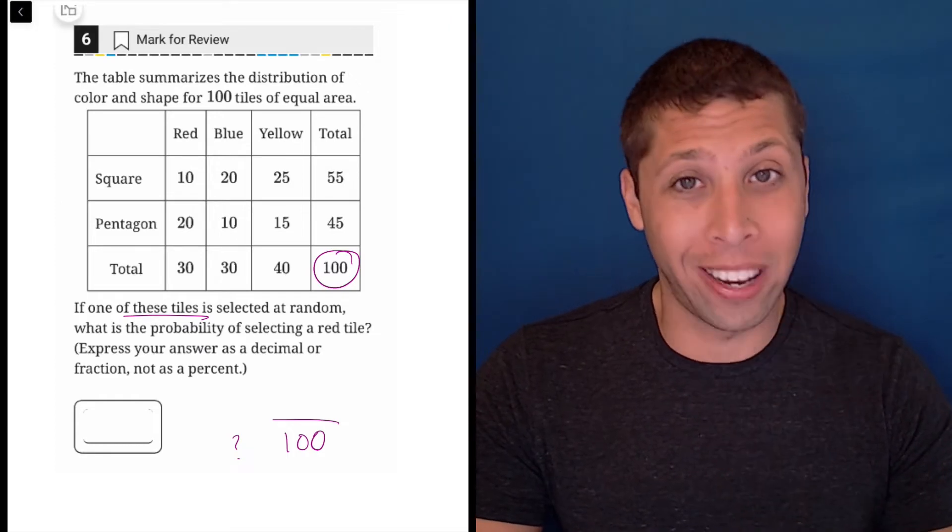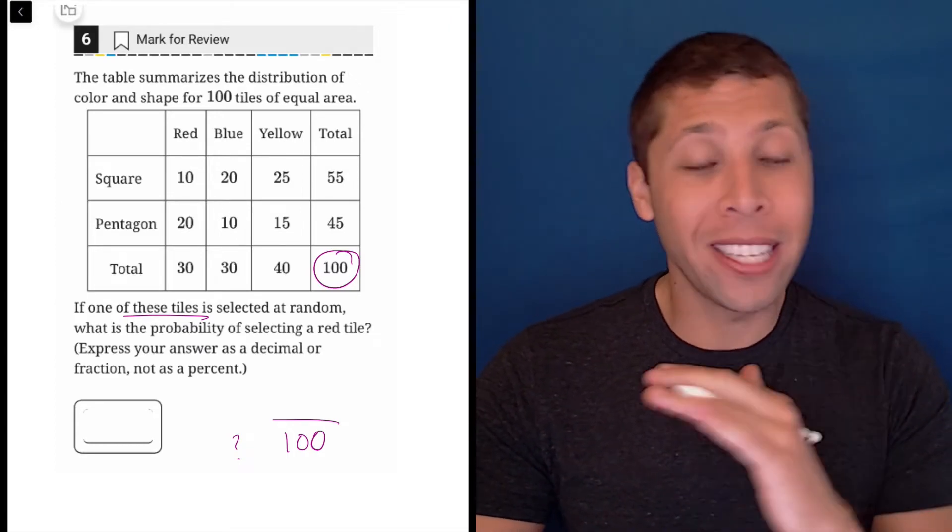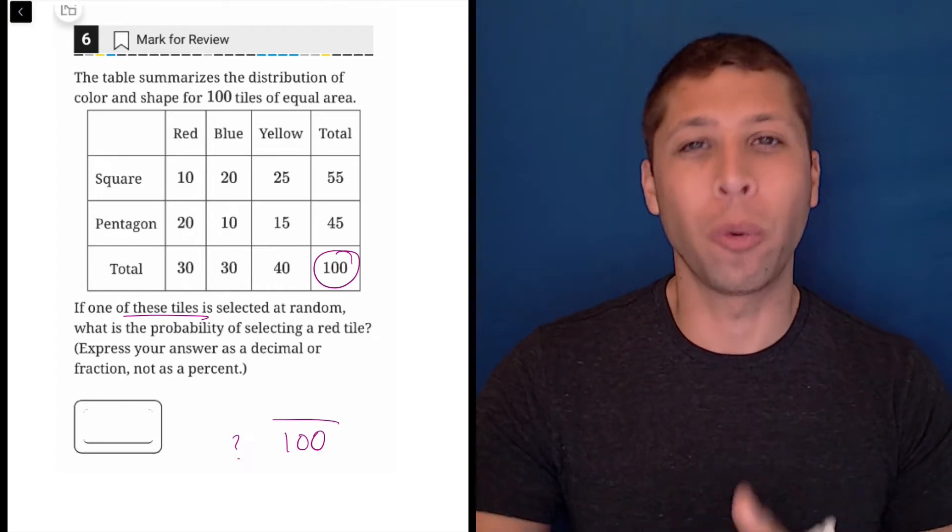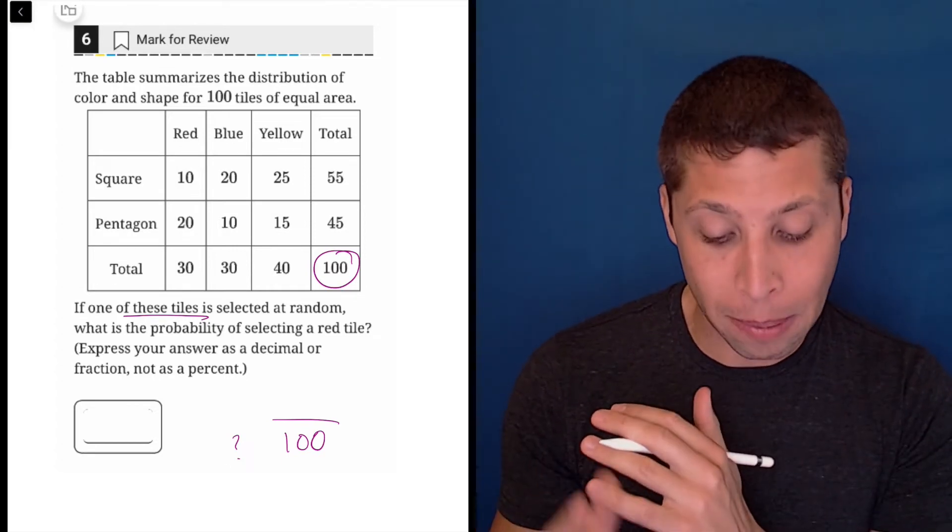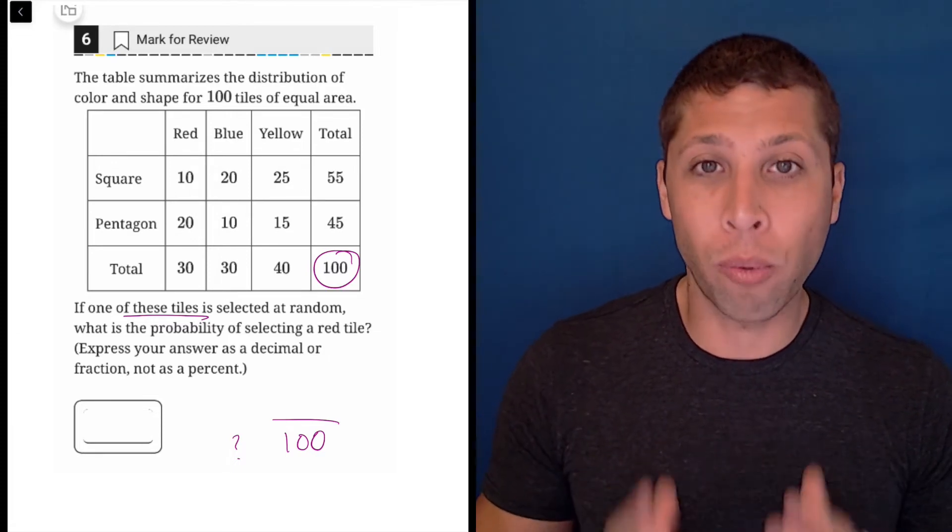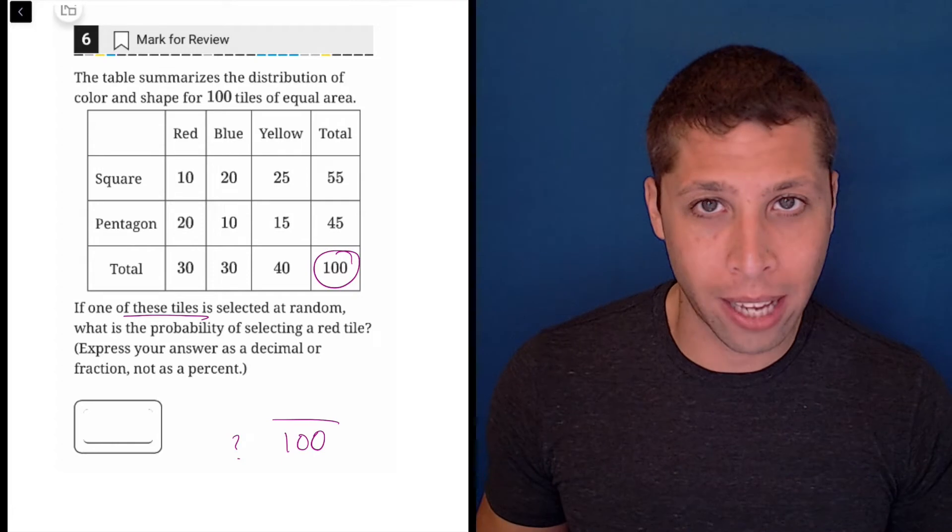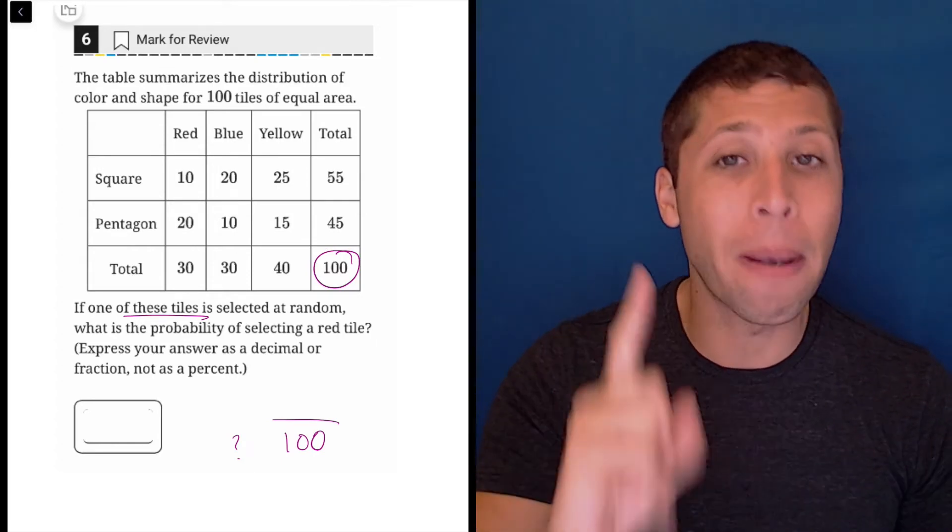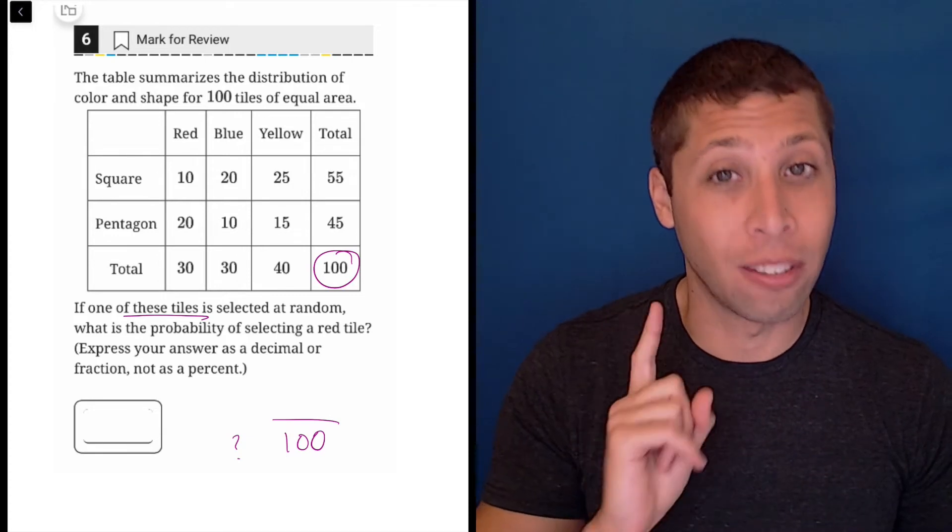Most of the time when the SAT asks questions like this, we are not using the total. We are using some other piece, like maybe just the blue tiles or just the Pentagon tiles. This is a rare exception where there isn't really a twist. We can just go with the overall total, but you still need to think about it and think about the possibility of a twist because it's very common.